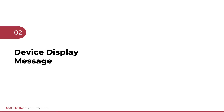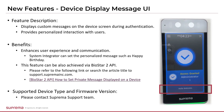Next is the device display message function. This function was provided in the device firmware, but it was difficult to use through the Biostar 2 web UI. Let's see how it is supported in version 2.9.8. The device display message feature is simple — when a user is successfully authenticated, a personal message set for the user is displayed. This feature can be used to display a welcome message to new employees or visitors, or if you set it the day before their birthday, you can see 'Happy Birthday' when they authenticate. Please try using the Biostar 2 API in various ways. Most Biostar 2 devices with LCDs support this feature, but we recommend checking with Suprema technical support in advance.